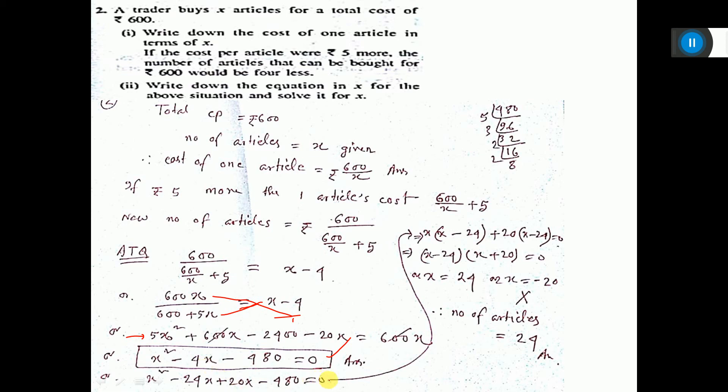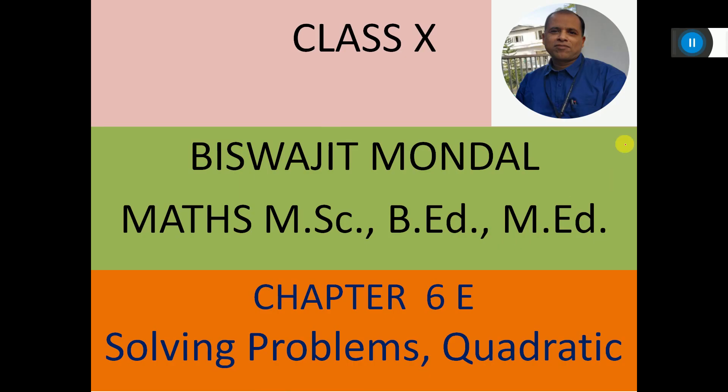Now either this equals zero, that means x equals 24, or this equals zero, means x equals minus 20. But it cannot be because x is number of articles. Number of articles cannot be negative, so the answer will be 24. That's all for this sum.